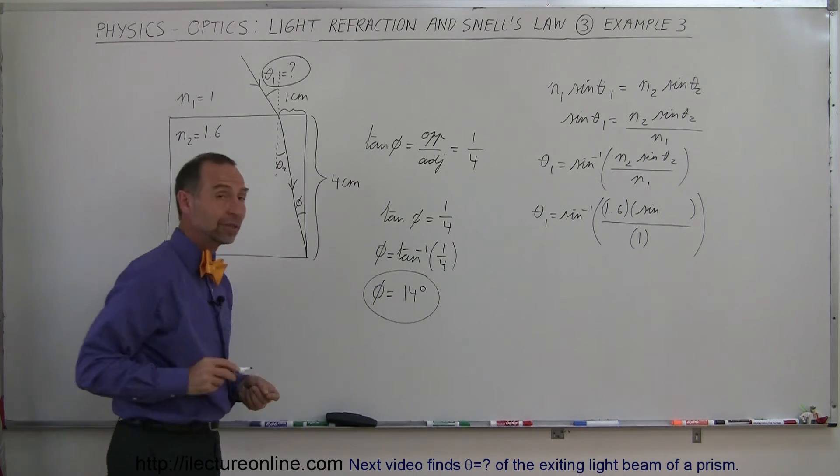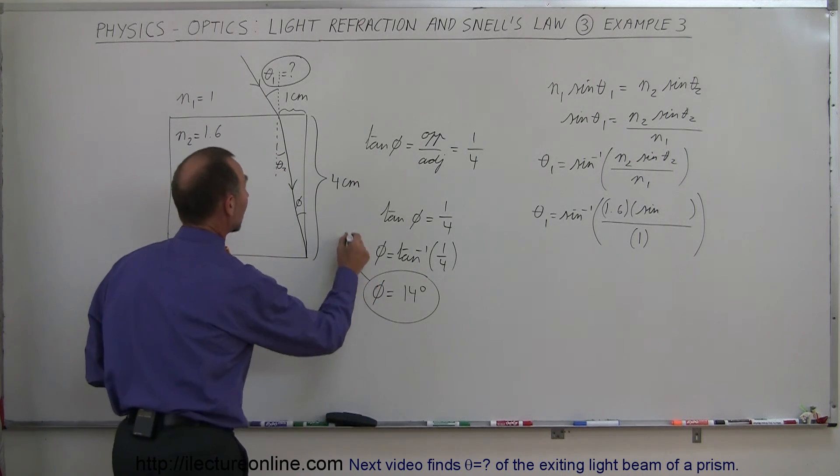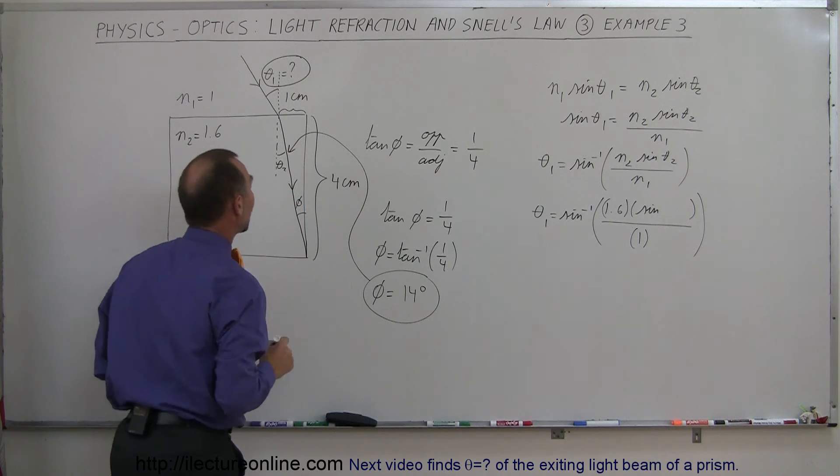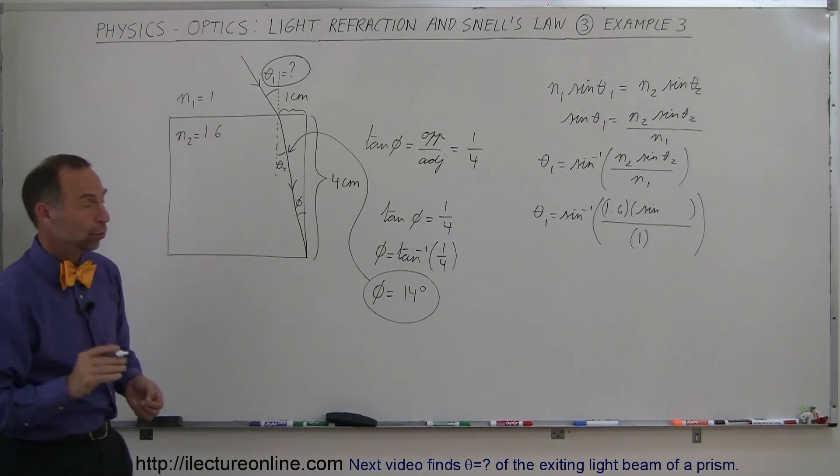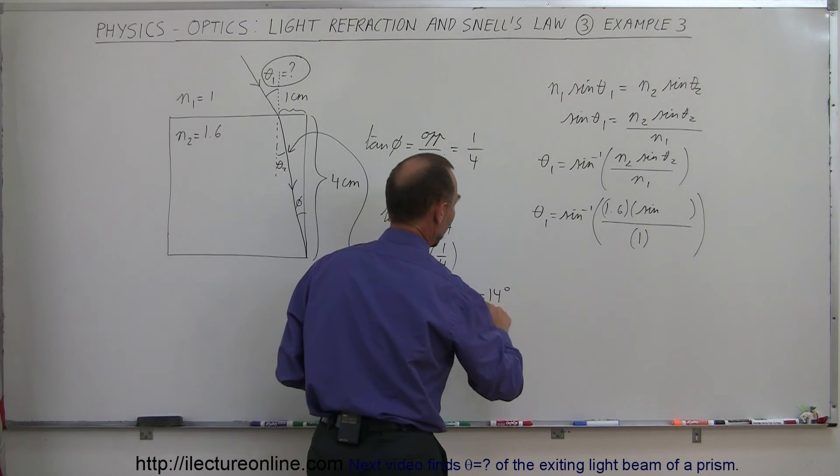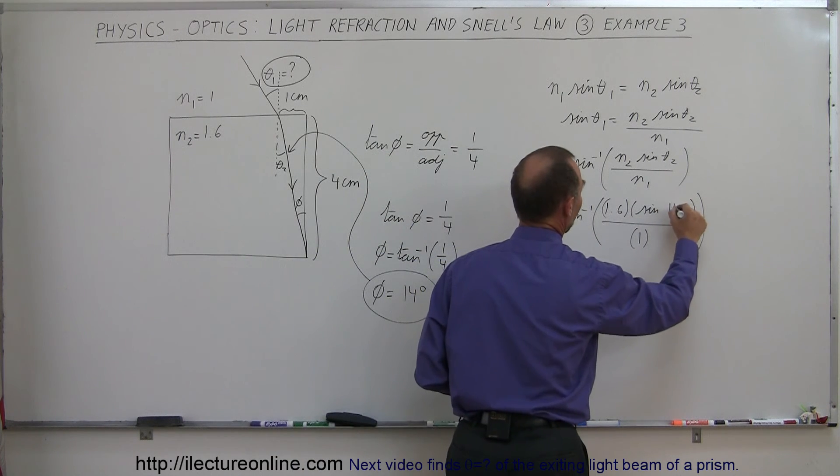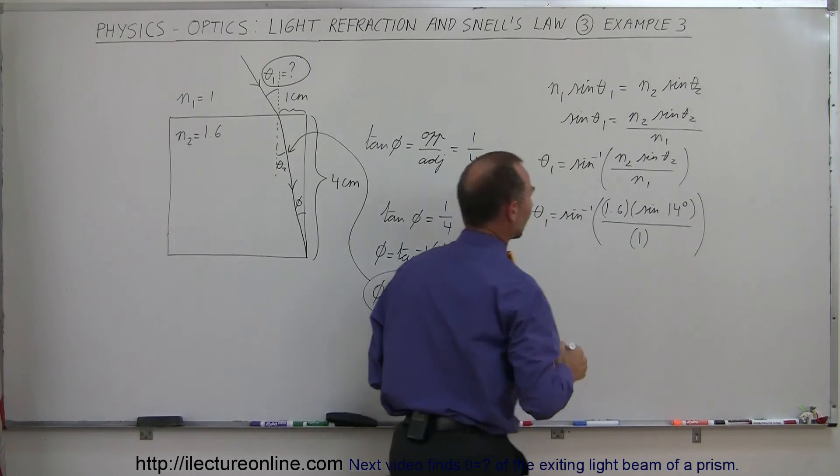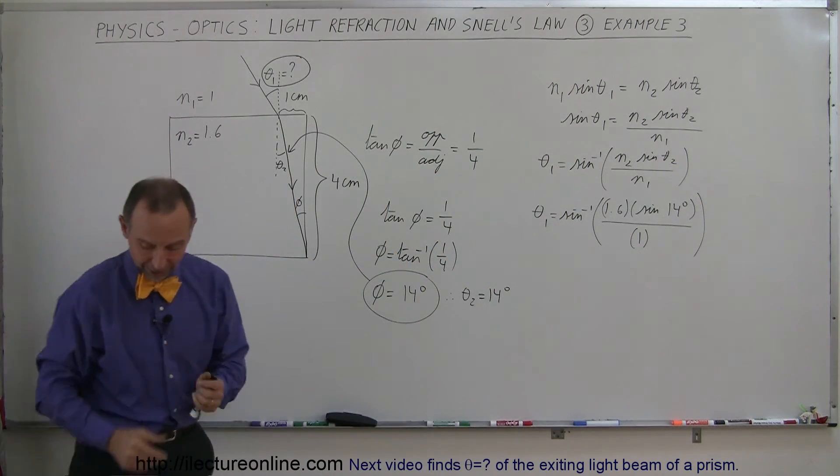Alright, if phi is 14 degrees, that means the refracted angle theta2 also is 14 degrees. So therefore, we can say that theta2 is also 14 degrees, and that goes in here. So that's the sine of 14 degrees, the sine of theta2. Now we're ready to find theta1.